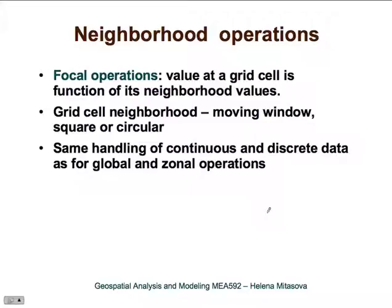Now let's look at neighborhood operations, also called focal operations. Here, the value at a grid cell is computed as a function of its neighborhood values. To apply these focal operations, we need to define a grid cell neighborhood, usually defined by a moving window. This moving window is usually square — a 3×3 or 5×5 neighborhood — though sometimes other geometries such as circular or anisotropic neighborhoods are used. The same rules apply for handling continuous and discrete data as we already mentioned for global and zonal operations.